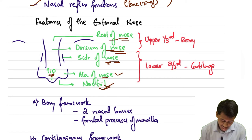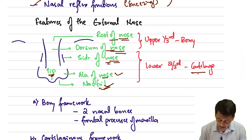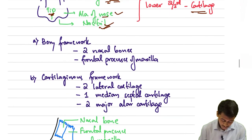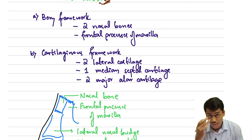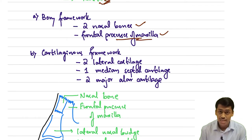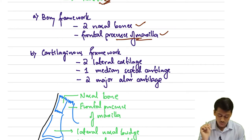The lower two-thirds of the nose is formed by cartilage, and the upper one-third is formed by the bony structure — the nasal bones. The bony framework of the upper one-third is formed by the two nasal bones as well as the frontal processes of the maxilla.